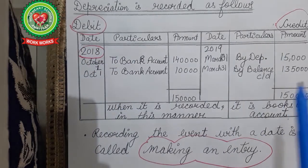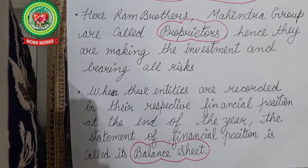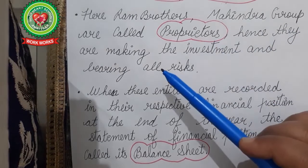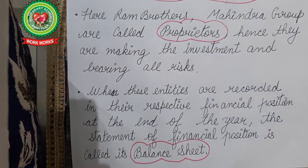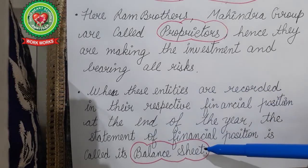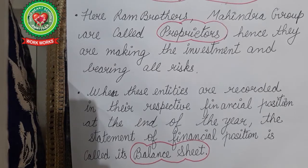Ram Brothers and Mahindra Group are called proprietors — meaning owners of the business — because they are making the investments and bearing all the risks. When all these entities are recorded in the financial position at the end of the year, that statement is called a balance sheet. A balance sheet is a summarized statement of all assets and liabilities of a company at the end of one particular year.